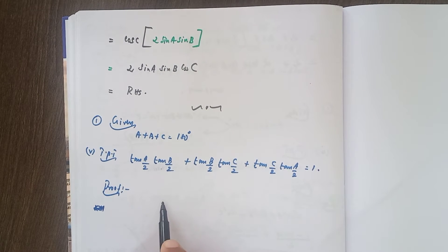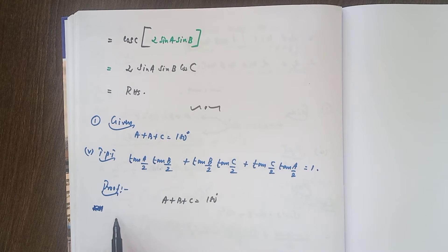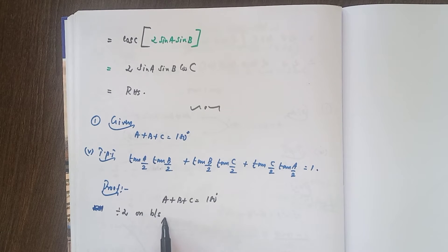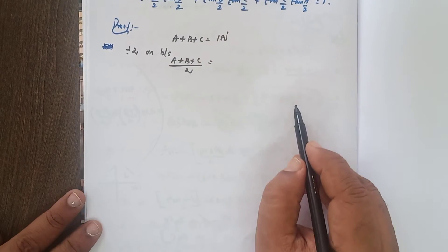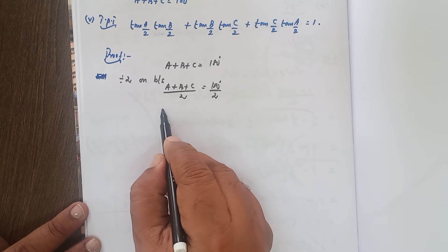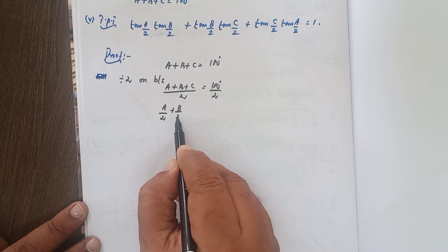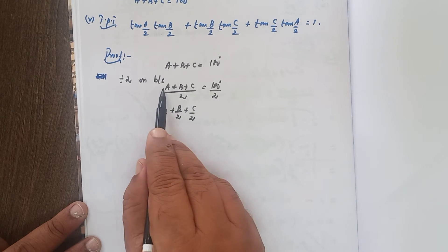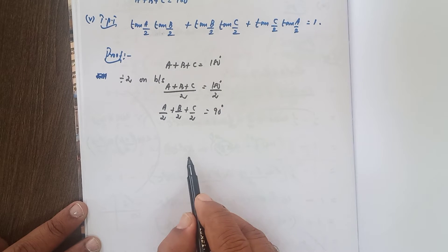Here, what is given: A plus B plus C equals 180 degrees. Dividing both sides by 2, A/2 plus B/2 plus C/2 equals 180/2, which equals 90 degrees.